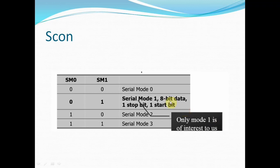In serial mode 1, the data framing consists of 8 bits of data, one stop bit, and one start bit. This makes it compatible with the COM port of an IBM-compatible PC. Serial mode 1 allows the baud rate to be variable, set by timer 1 of the 8051 microcontroller. In this mode, 10 bits are transmitted per character: 8 bits of data, one start bit, and one stop bit.